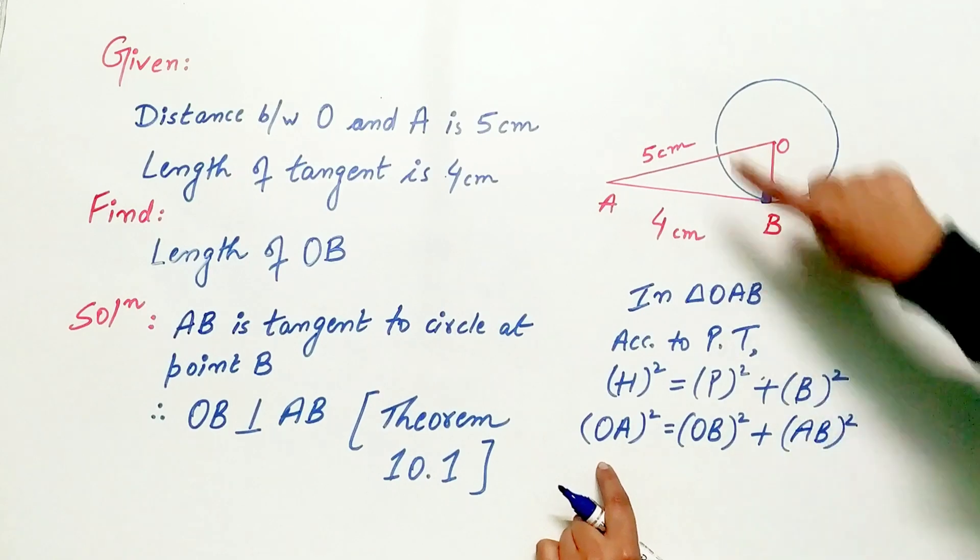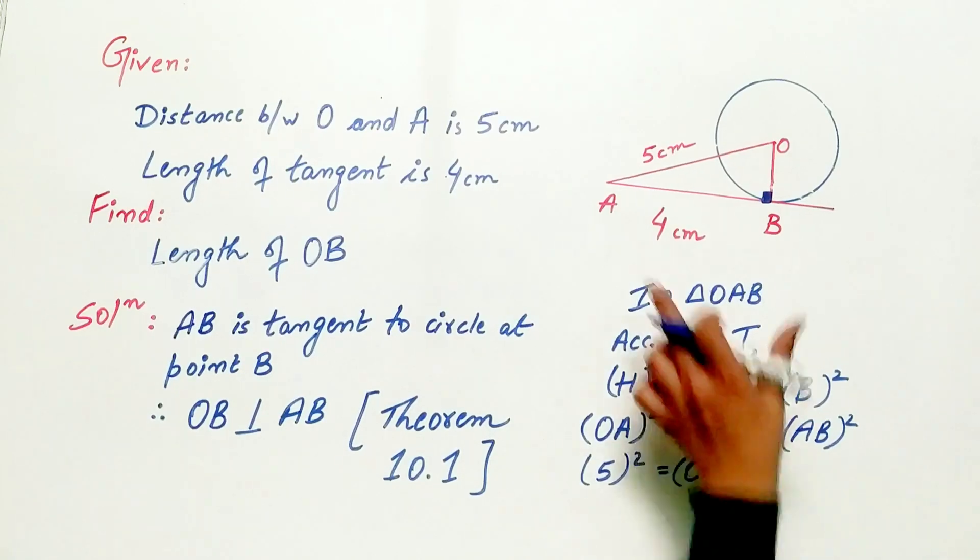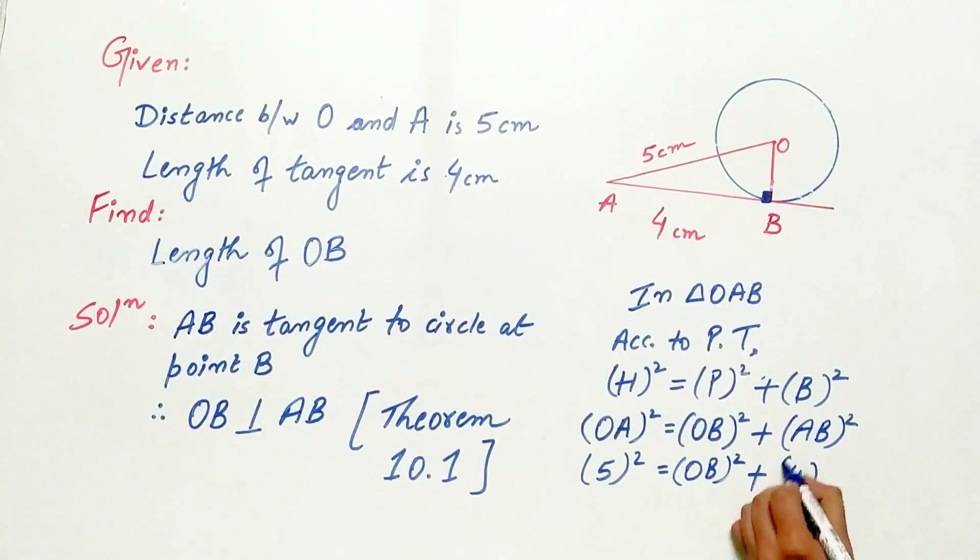OA is 5 cm. OB, we have to find out. AB is 4 cm.